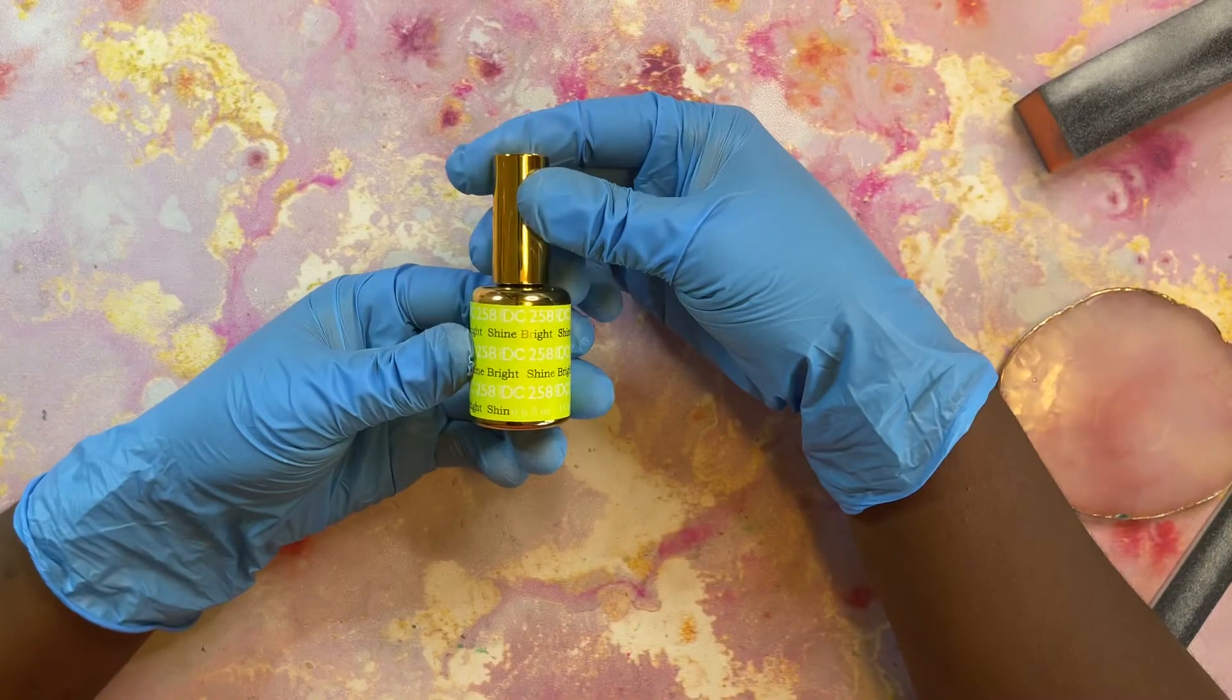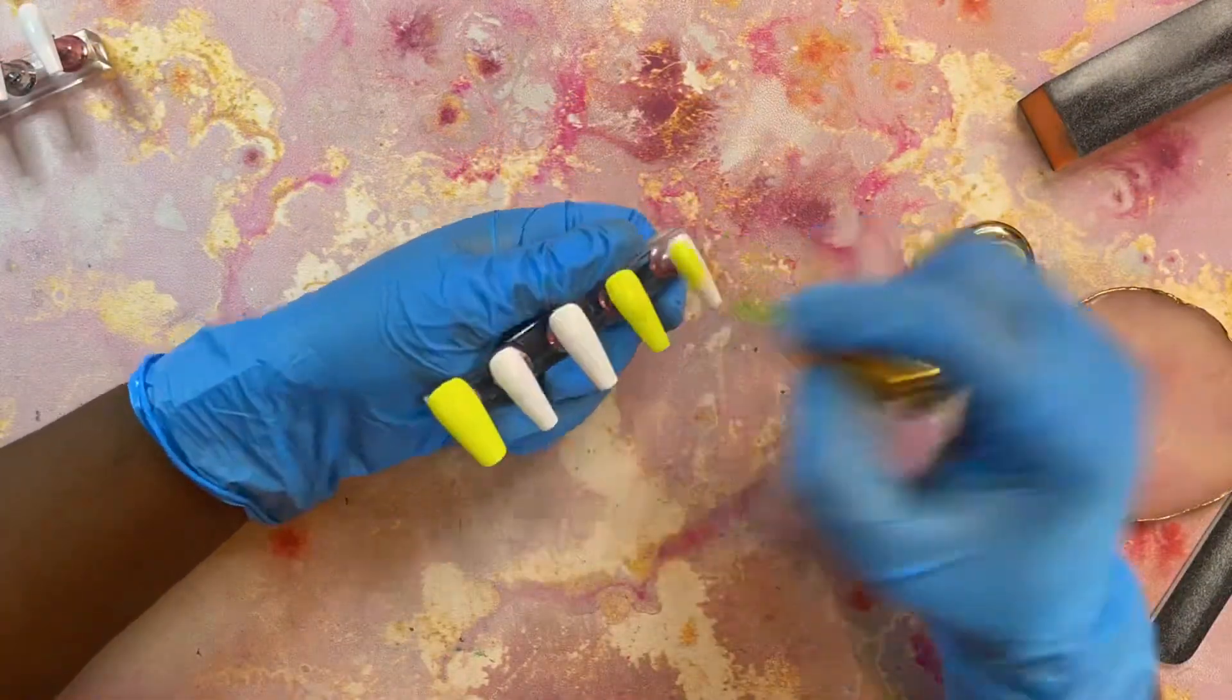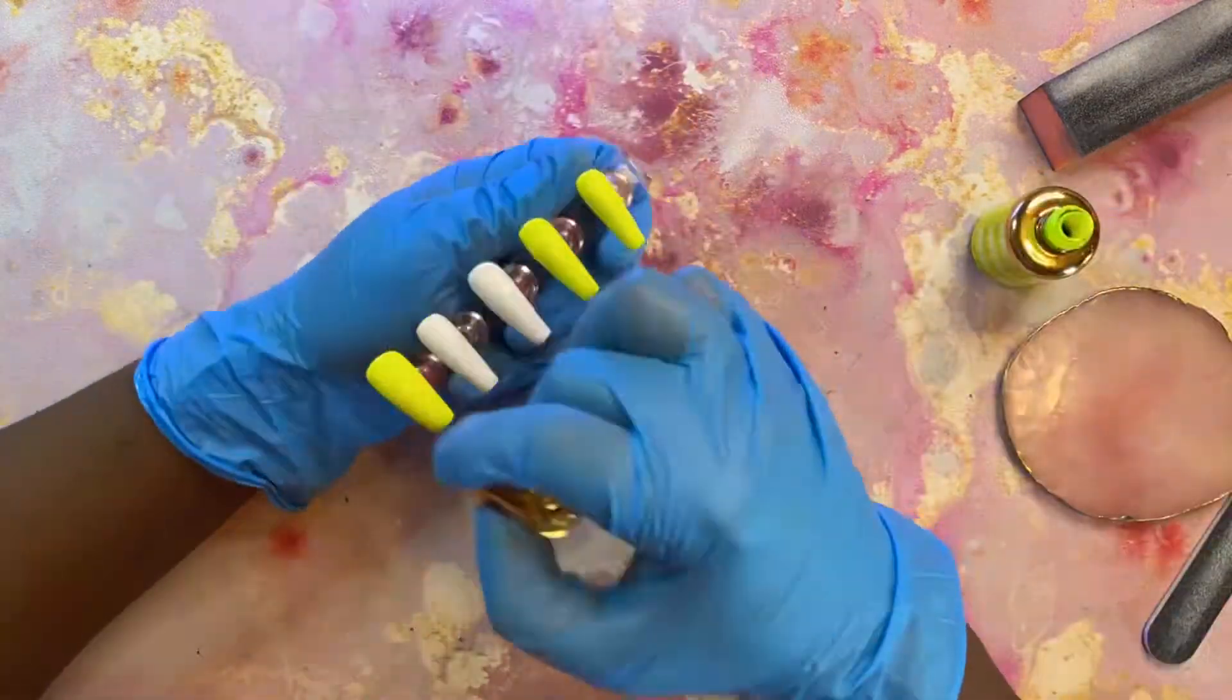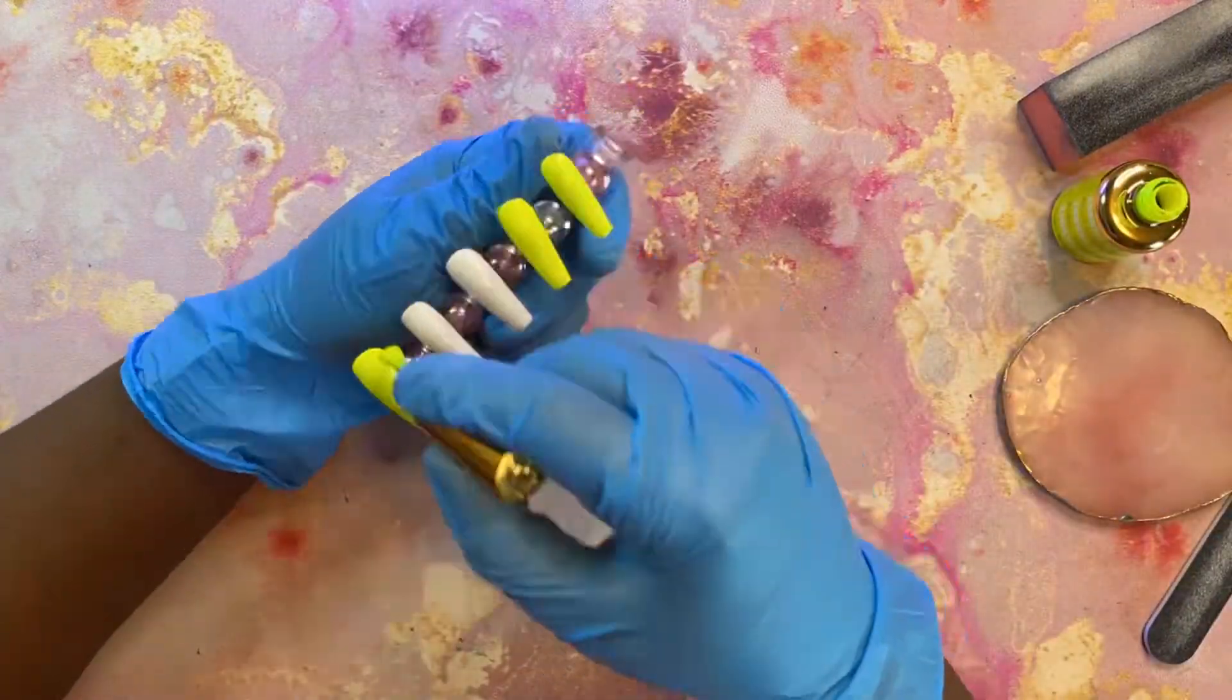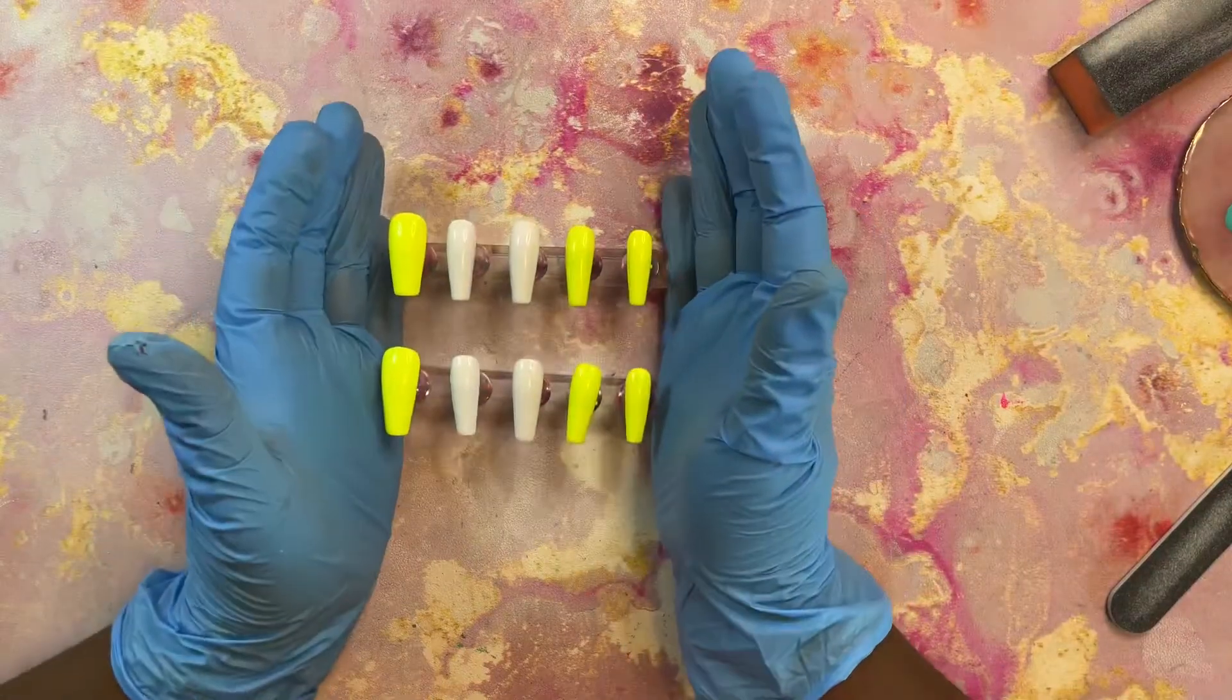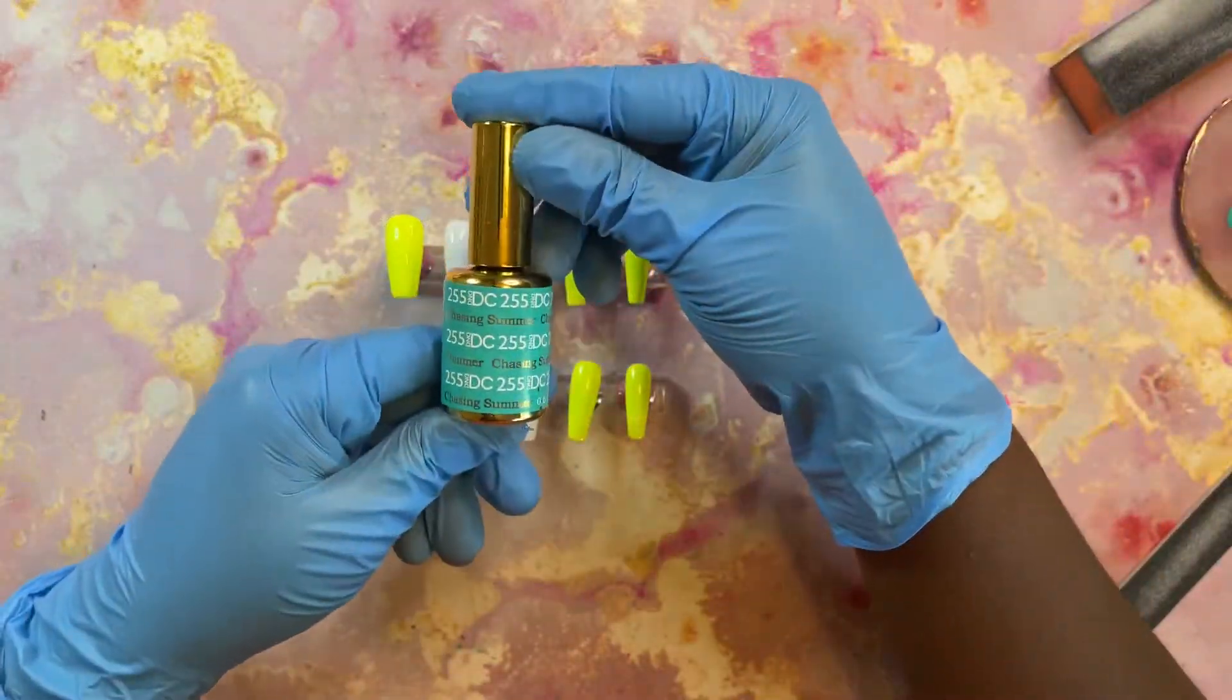This is the gel polish that I will be using - it's called Shine Bright by DND. I'm going to really quickly go ahead and do my thumb, ring, and pinky finger for both hands. I'm going to paint them both this color.